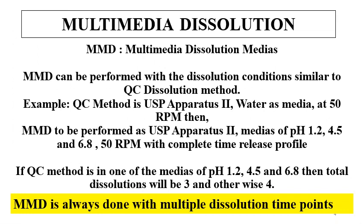MMD can be performed with dissolution conditions similar to the QC dissolution method. For example, if the QC method is USP Apparatus 2 with water as media at 50 rpm, then MMD is performed at USP Apparatus 2 with medias at pH 1.2, 4.5, and 6.8 at 50 rpm with a complete time-release profile. Multimedia dissolution is always done with multiple time points. If the QC method is one of the pH 1.2, 4.5, or 6.8 medias, the total dissolution count will be three; otherwise, the total will be four. These are not limited to four medias — as per product and regulatory requirements, they can be increased.